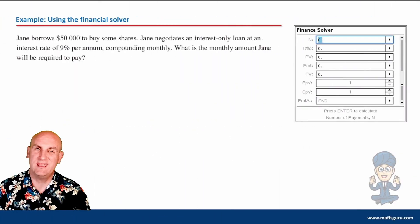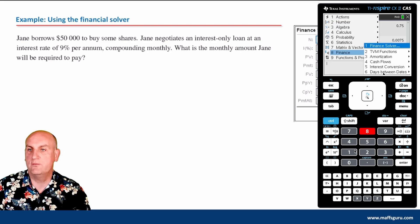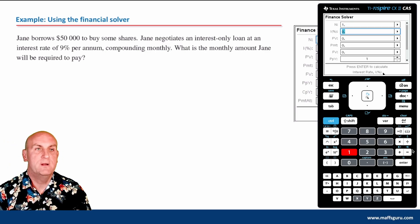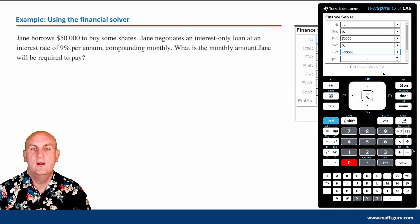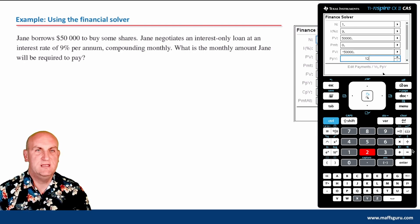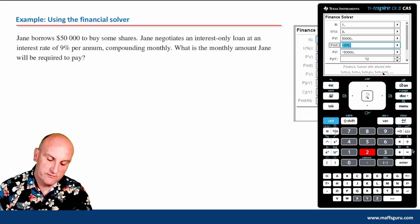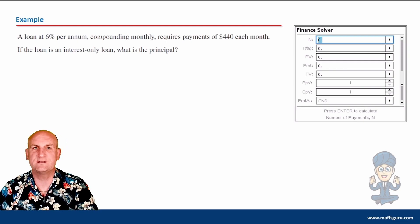Can we use the financial solver? Of course. Let's view menu 8-1. N is 1 because it's an interest-only payment. Interest rate was 9% per annum. Principal value - she's borrowing to buy shares, so positive. Future value, because it's interest-only, she's still going to owe that $50,000. Payments per year is 12. If I hit my PMT, minus $375.